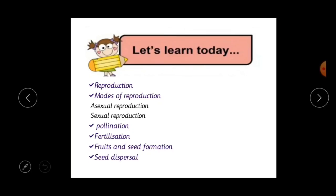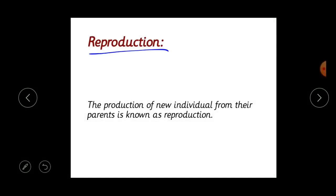We will cover sexual reproduction, asexual reproduction, pollination, fertilization, fruits and seed formation, and seed dispersal. The production of new individuals from their parents is known as reproduction. All living organisms have the characteristic that they can reproduce their own kind, and this production of offspring from the parents is called reproduction.